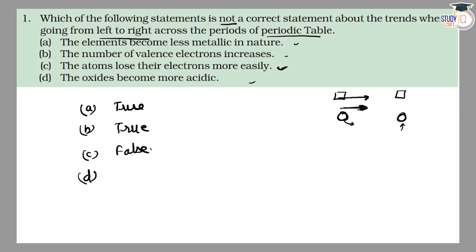Option D: The oxides become more acidic. This is true. So you can write correct and incorrect, which means option number C is correct.